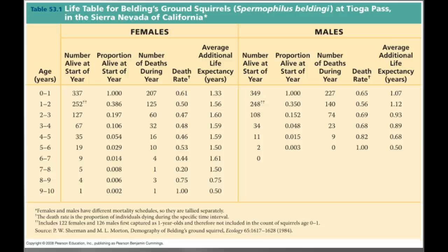Demographers are interested in birth and death rates. A life table is an age-specific summary of the survival patterns of a population, and is best made by following the fate of a cohort — a group of individuals of the same age. Write that down. The life table shown here uses Belding's ground squirrels and reveals many things about this population.